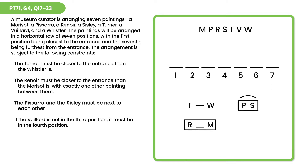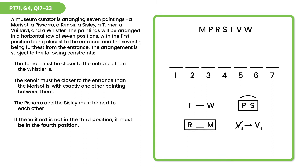The third rule tells us that P and S must be next to each other, so we know they form a block, but we don't know the order. We don't know whether P will precede S or S will precede P, so we put a little handle on the block indicating it can flip either direction. The last rule: if V is not in the third position, it must be in the fourth position — we write that as an if-then rule.